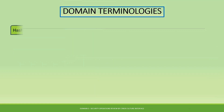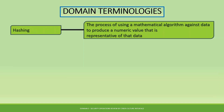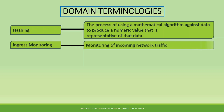Then we have hashing. Hashing is a process that uses a mathematical algorithm against data to produce a numerical value that is representative. It involves using the hash function mentioned earlier. The essence of hashing is to get a hash value which is used to verify the integrity of data.